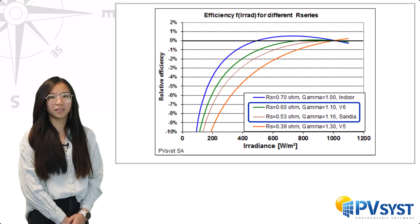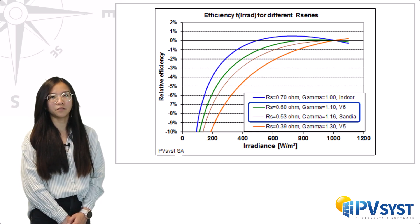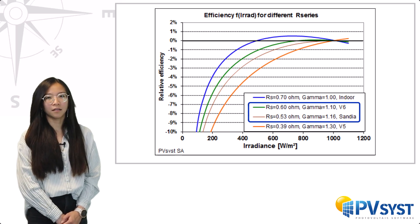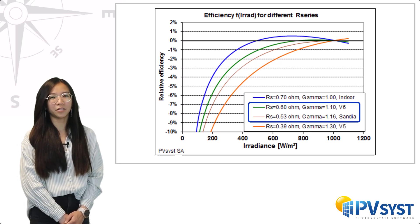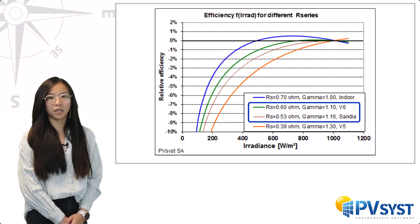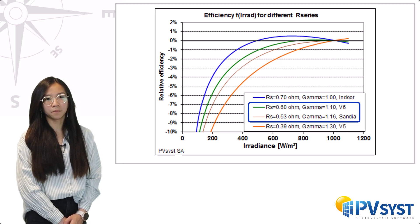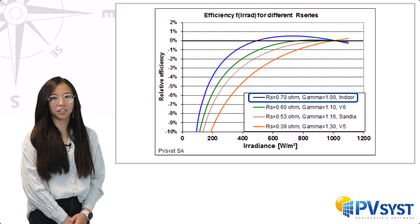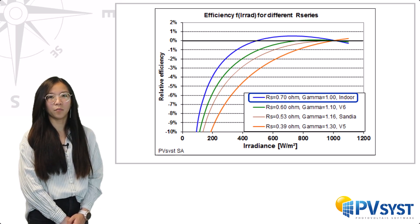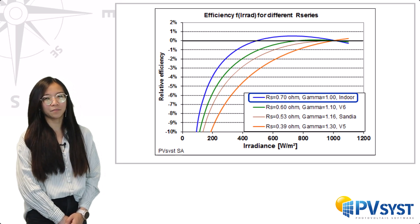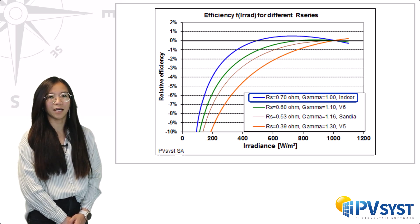At that time, we were convinced that outdoor measurements are a better representation of PV modules in operation. We tried to find other outdoor measurements. The Sandia Laboratories measured about 100 PV modules at SUN, and their results suggest a value of gamma equals 1.16. For the beginning of version 6, we adopted a default value of 1.1. Finally, we based our evaluations on indoor flash test measurements, as they are more accurate due to being recorded with a pure beam component. Outdoor measurements are affected by diffuse irradiance and the unavoidable associated IAM loss.